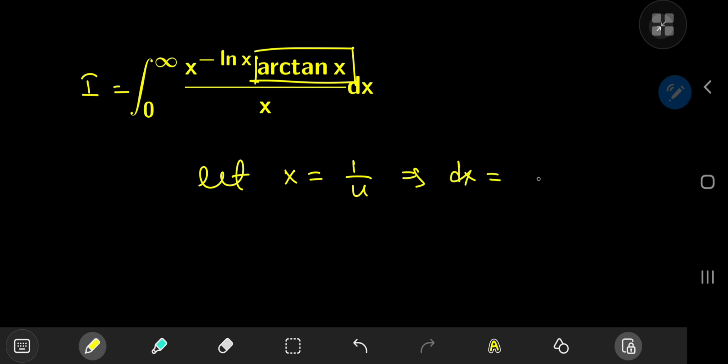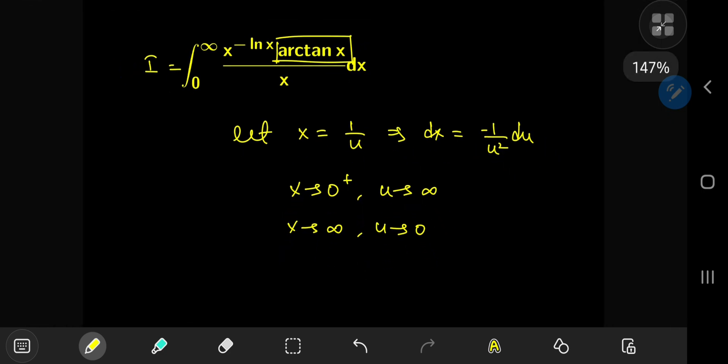This implies that dx equals negative 1 by u squared du. And as x approaches 0 from the right, u will approach positive infinity. And as x approaches infinity, u has to approach 0.